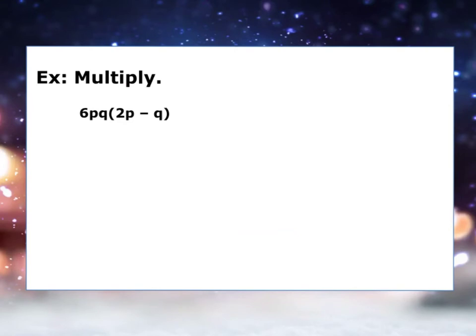Here's a more complicated example. We're going to distribute 6pq to the first and second term. This is multiplying and using the distributive property of a monomial.